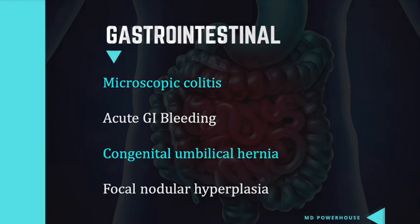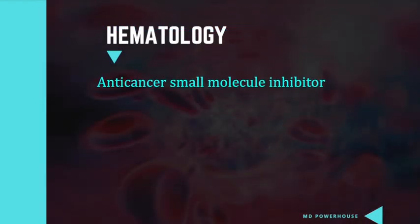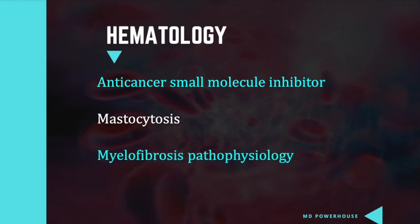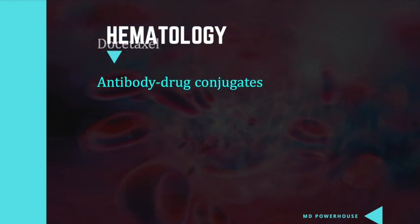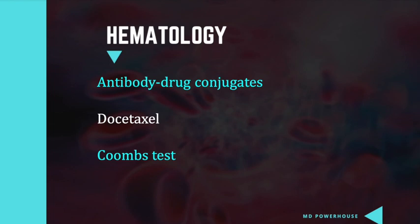In hematology, the updates include anti-cancer small molecule inhibitors, anti-cancer monoclonal antibodies, mastocytosis, the pathophysiology of myelofibrosis, and how to ameliorate the adverse effects of chemotherapy — a high-yield topic if you've done practice questions. Continuing the hematology list: antibody drug conjugates, docetaxel, camptothecins, and a comparison between leukemoid reaction and CML.